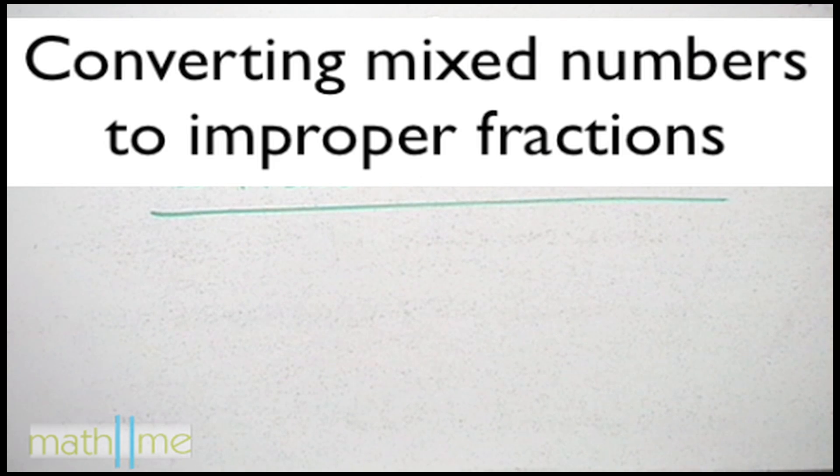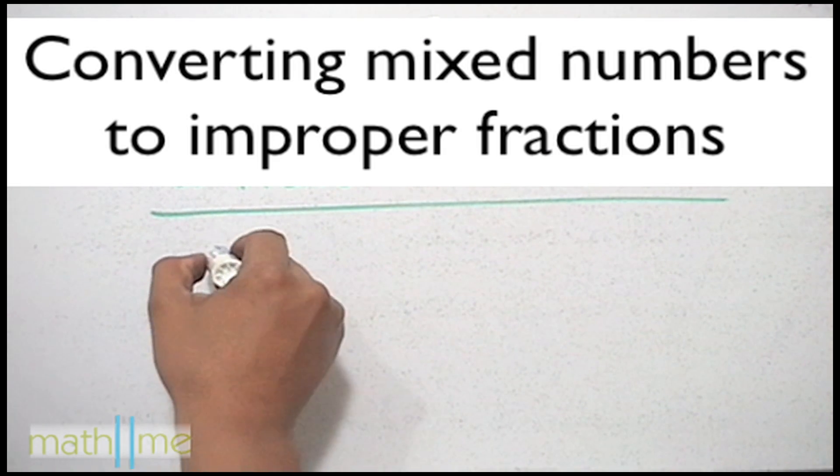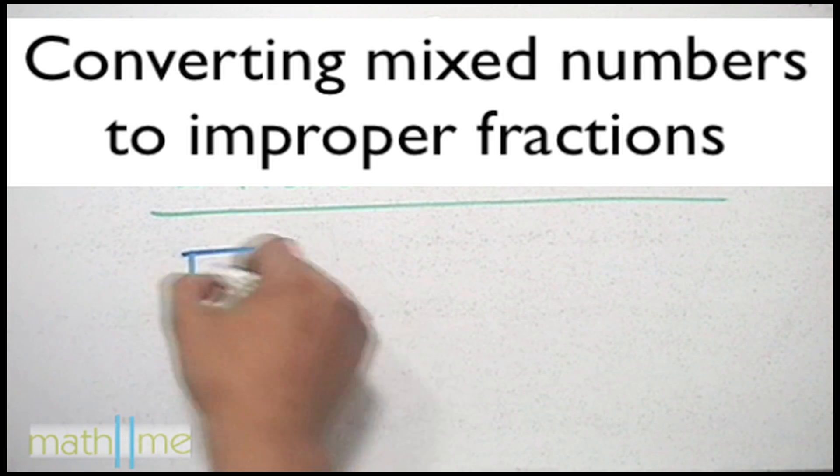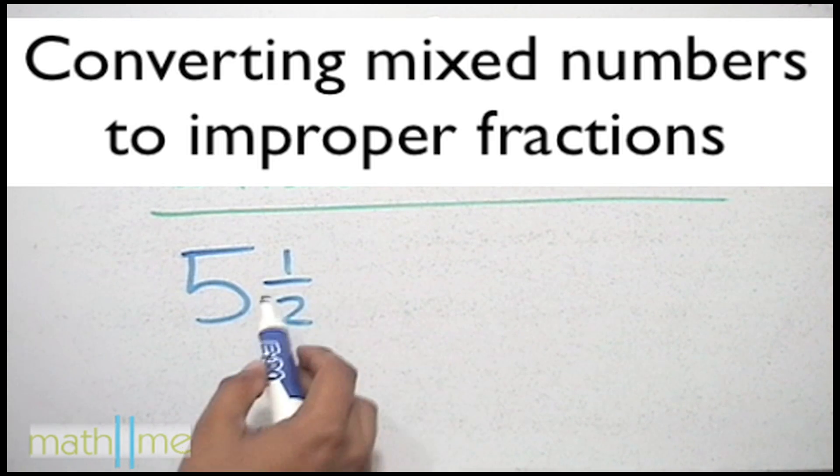Converting mixed numbers to improper fractions. A mixed number is a whole number and a fraction. In this case, 5 as the whole part and a half as the fraction part.